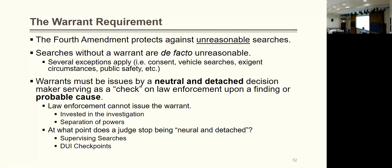Law enforcement cannot issue warrants for themselves — it must be a neutral, detached judge or magistrate. There's also a separation of powers rationale: police are part of the executive branch; courts are the judicial branch. Before the executive branch conducts a search, they must go through another branch of government, which ensures they are not exceeding their constitutional powers.